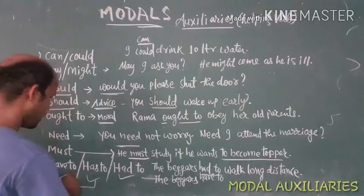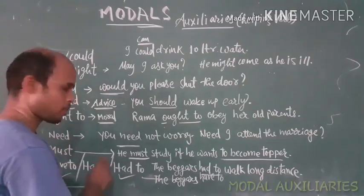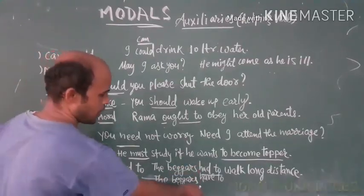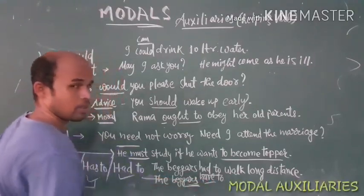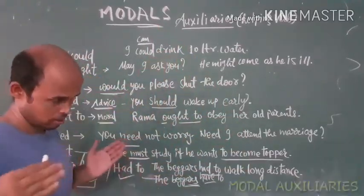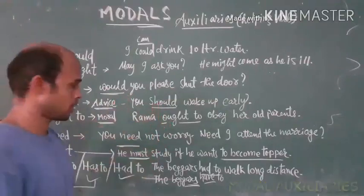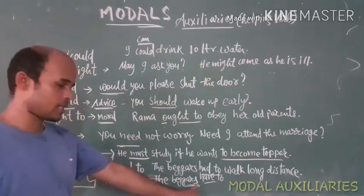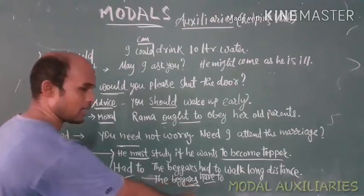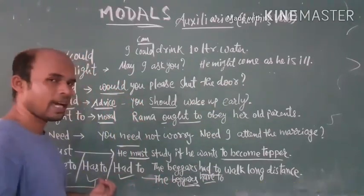Next we have have to and has to, used in the present tense. For example: 'The beggars have to walk long distances' — beggars is plural, so we use have. 'The beggars have to walk long distances to search for food and shelter.' Now if we use the singular — 'The beggar has to walk long distances' — we use has to for a single person.